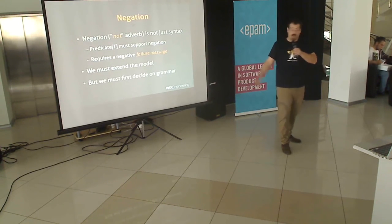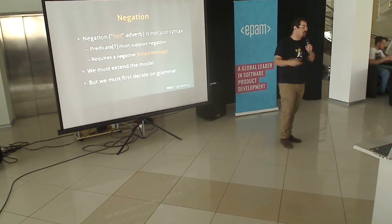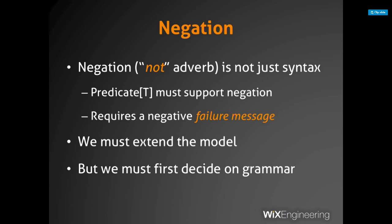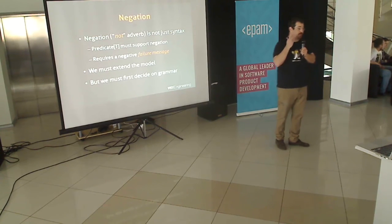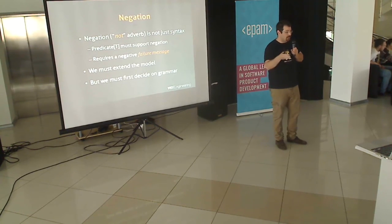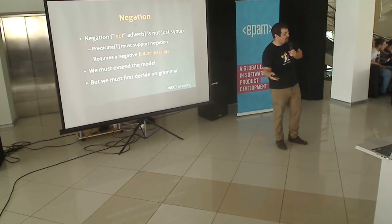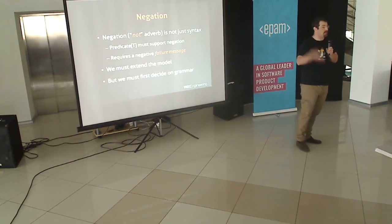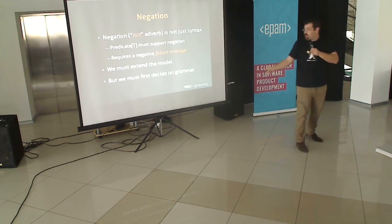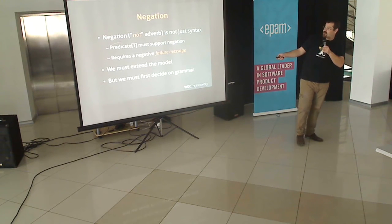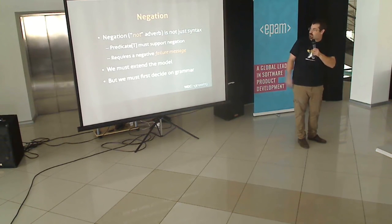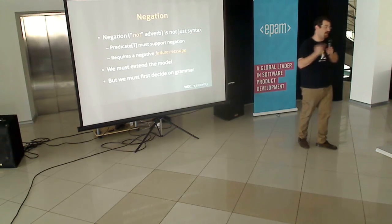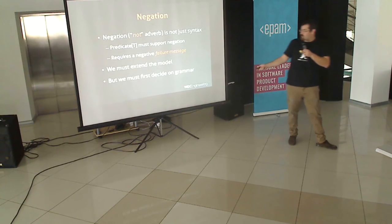Lastly, we have negation — the 'not' adverb — which so far I've ignored. Negating the predicate is not just about sentences — you expect to get a different message. If 'List(1 to 3) should not contain 3,' you expect a different message from 'List(1 to 3) should contain 5.' So a predicate at the base trait level should technically support negation, and we need to extend it to provide also a negative failure message.